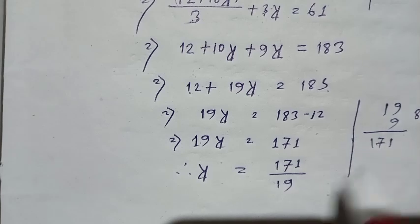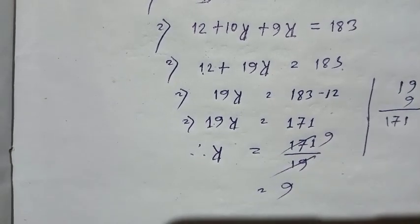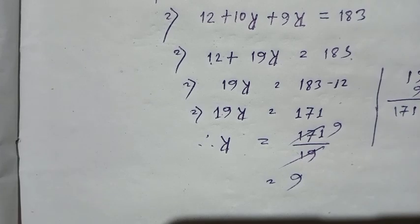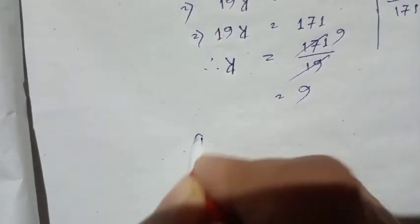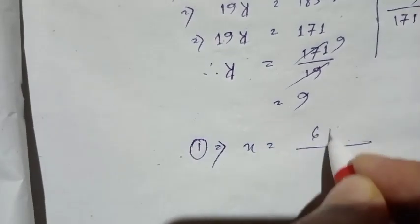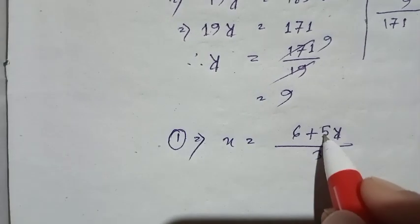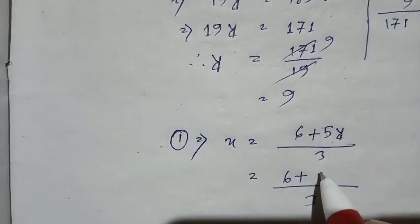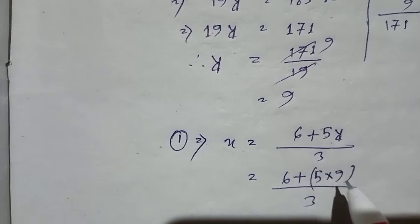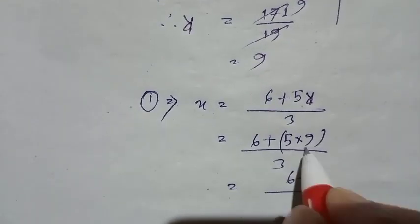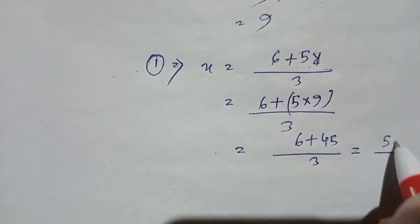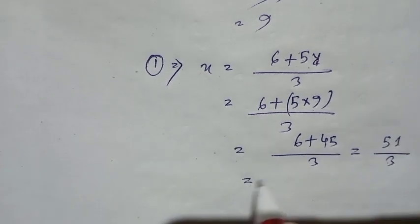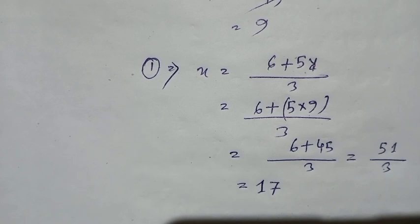No problem — we will avoid that part. Cover question number one: 6 plus 5y divided by 3 equals 9. We need to find the value of y. So 3 into 9 equals 27; 6 plus 5y equals 27. Then 5y equals 27 minus 6, so 5 into y equals 21. We get 45 plus 6 equals 51, divided by 3. So the answer is 51 divided by 3, which gives 17.